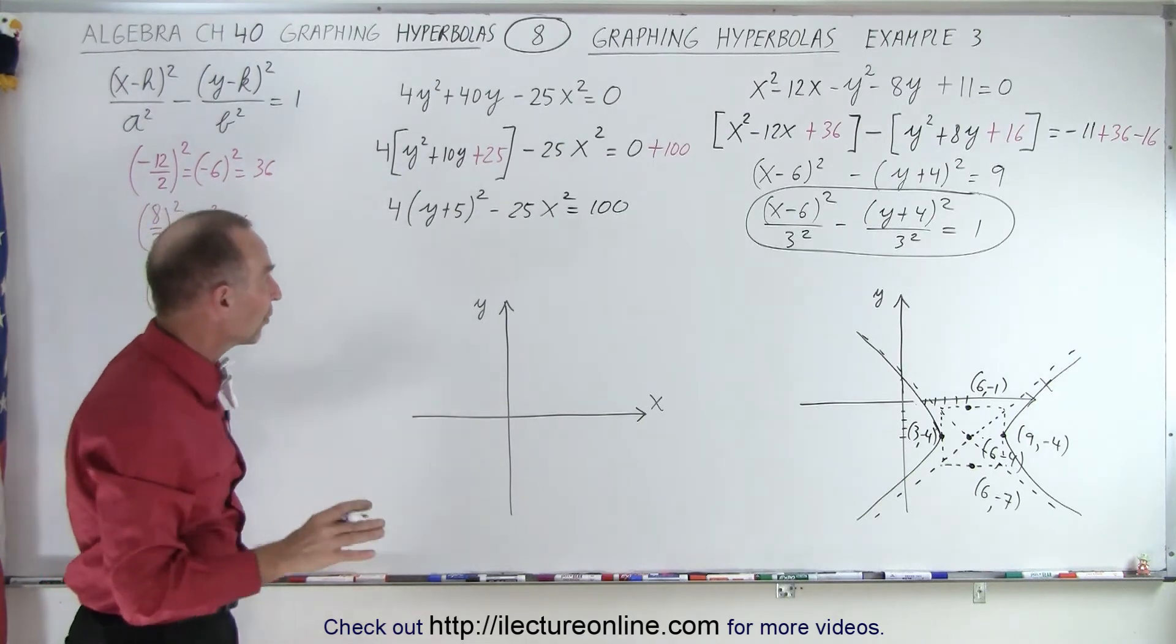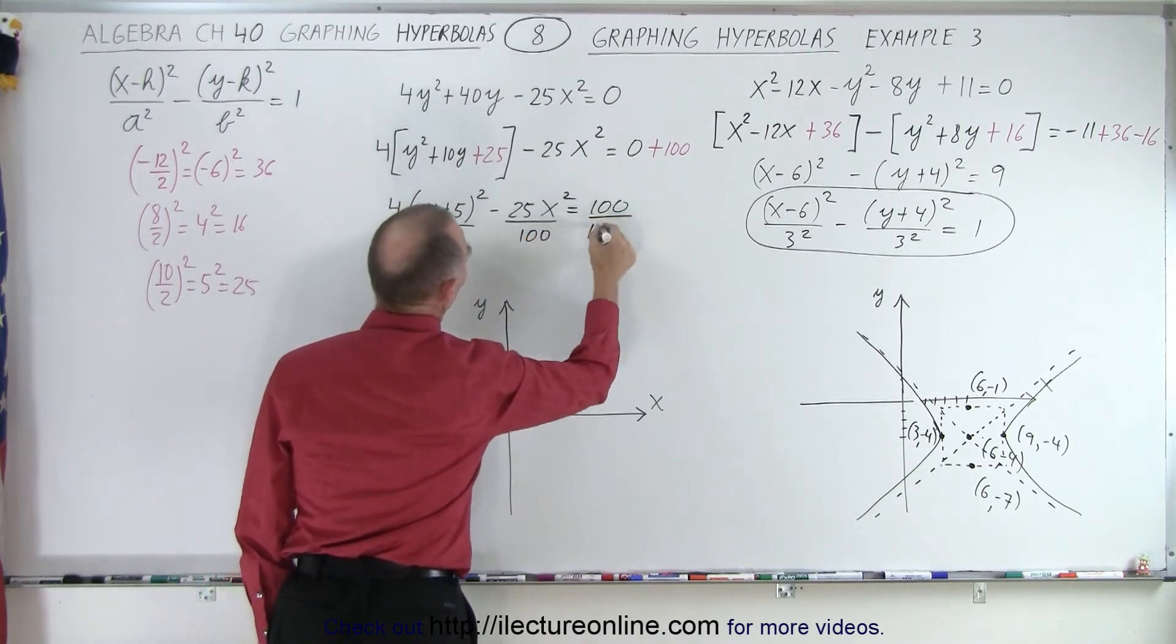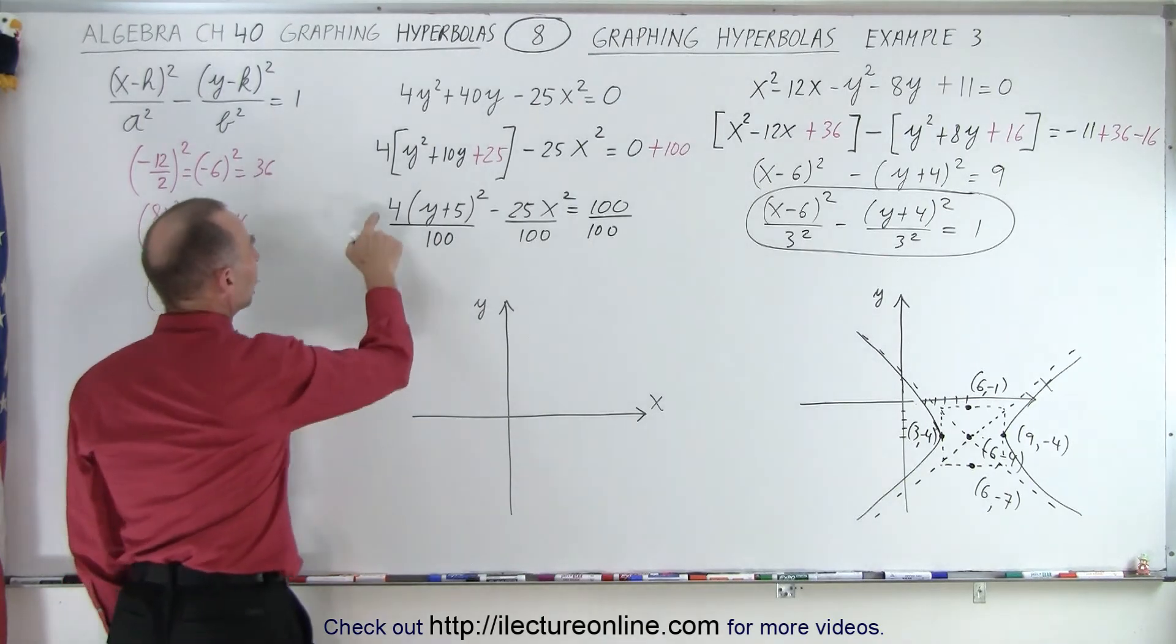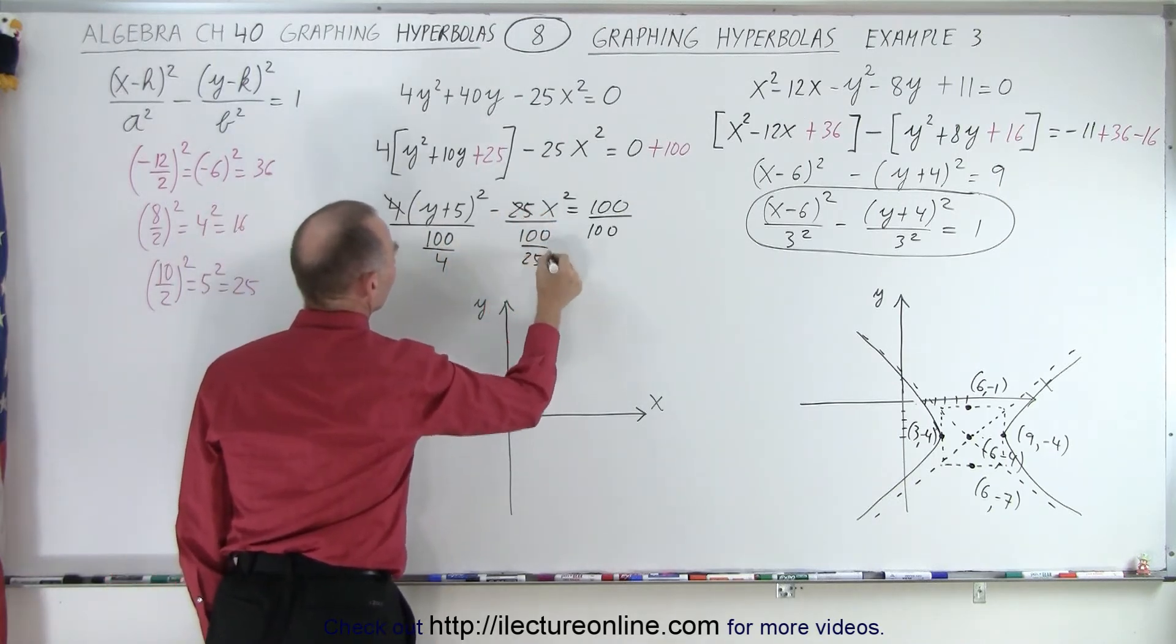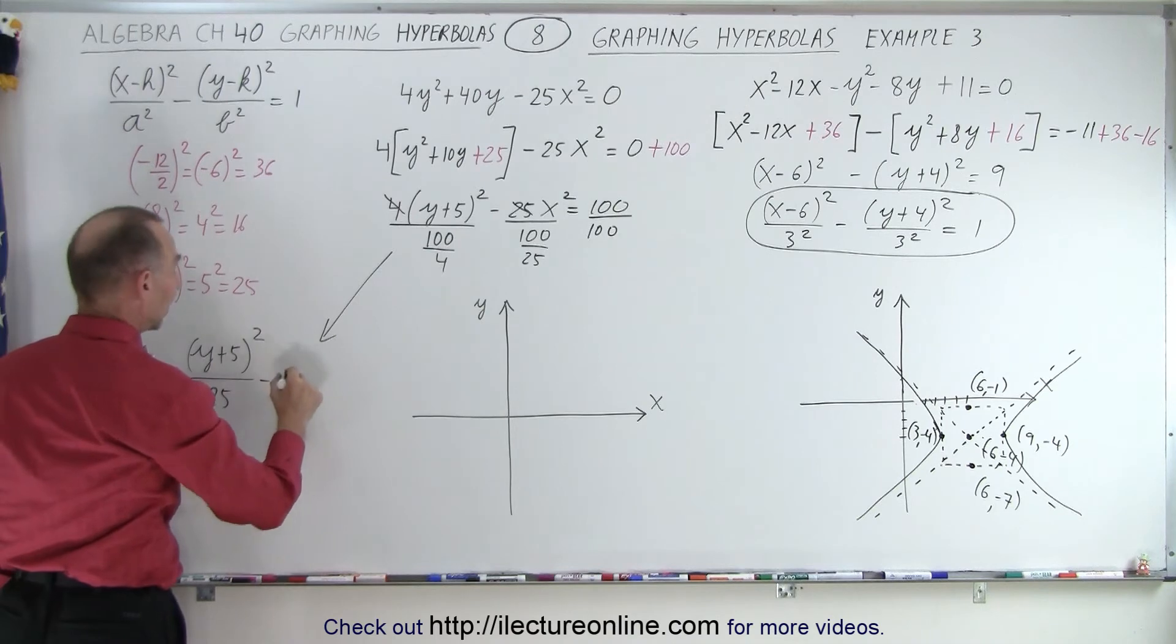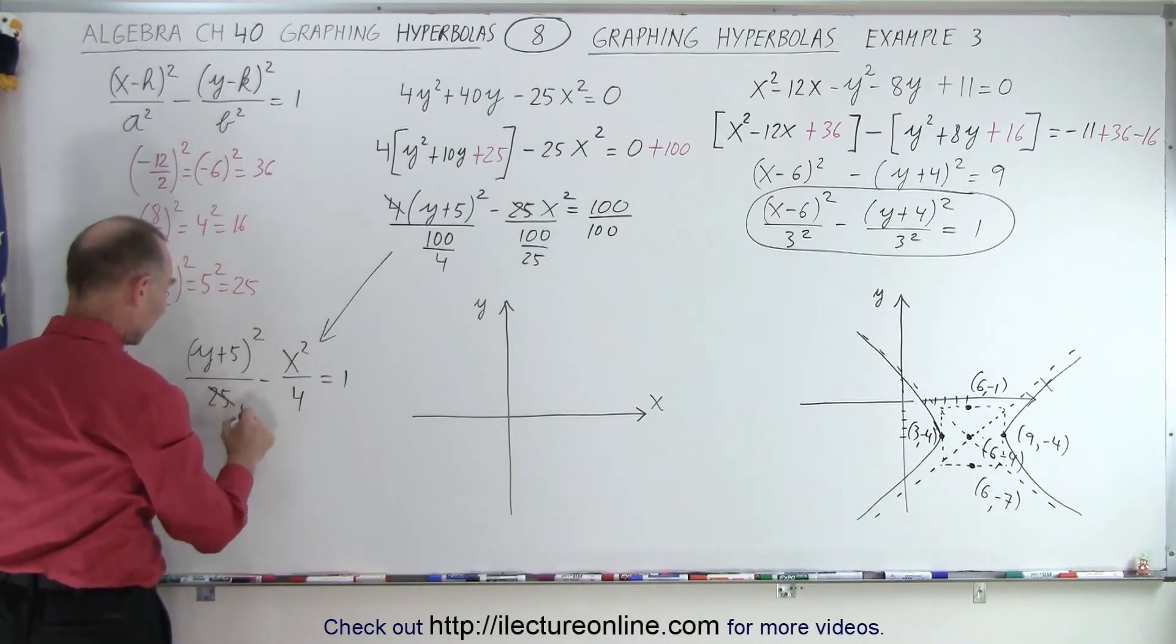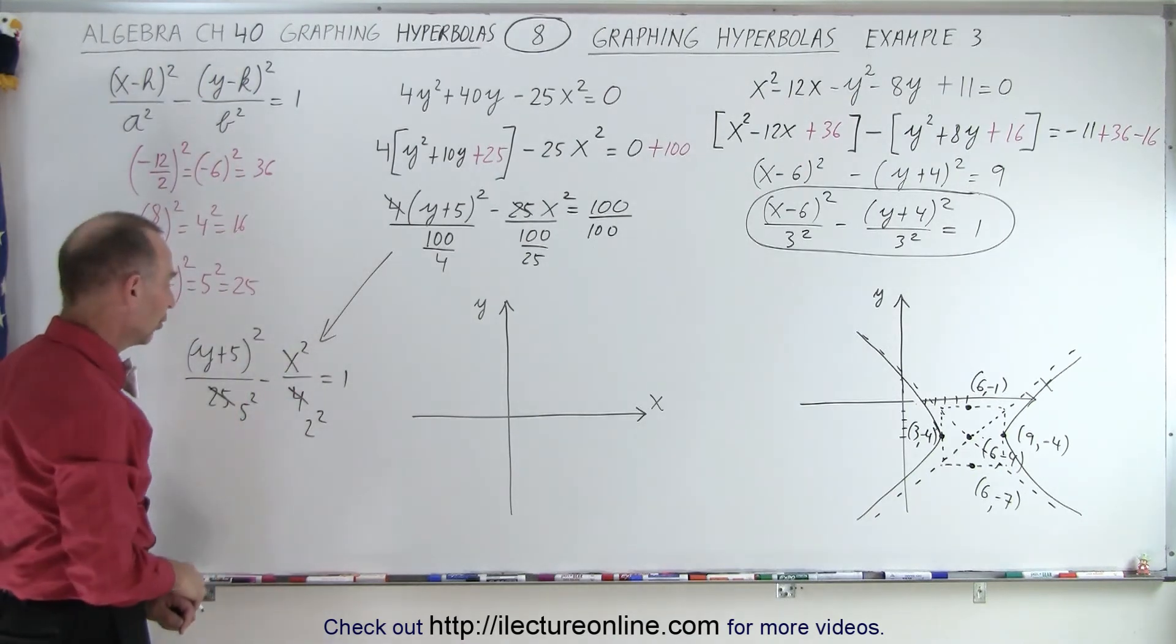Now we can write this as a binomial squared, so 4 times y plus 5 squared minus 25x squared is equal to 100. So what we're going to do now is divide both sides by 100. So now we end up with y plus 5 quantity squared divided by 25 minus x squared over 4 is equal to 1. And of course, 25 is the same as 5 squared and 4 is the same as 2 squared. So now we have it also in the general form, makes it easier to graph.